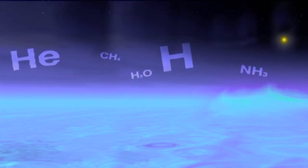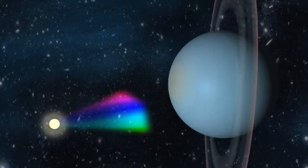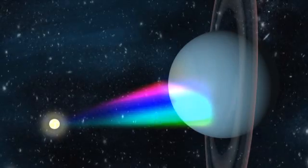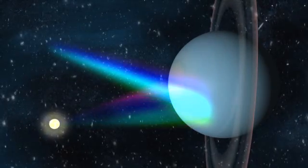The atmosphere on Uranus is mostly hydrogen and helium, with a small amount of methane and traces of water and ammonia. Sunlight passes through the atmosphere and is reflected back out by Uranus' cloud tops. The methane gas absorbs the red portion of the light, giving it its bluish-green color.